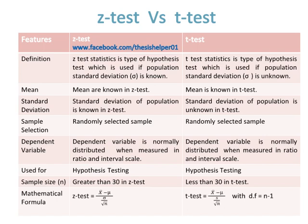The mathematical formula of Z-test is x-bar minus mu divided by the standard error of estimate, while the mathematical formula of T-test is x-bar minus mu divided by the standard error with n minus one degree of freedom. Here, x-bar is the estimate while mu is the hypothesized value.